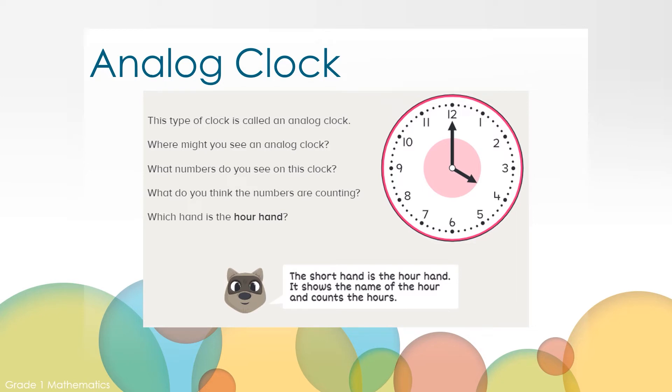This type of clock is called an analog clock. Where might you see an analog clock? Perhaps you've seen one on a watch or hanging up in your classroom at school. What numbers do you see on this clock? I see the numbers 1 through 12 on this clock with 12 being all the way at the top. What do you think the numbers are counting? The numbers help us count hours and minutes.